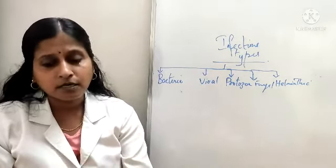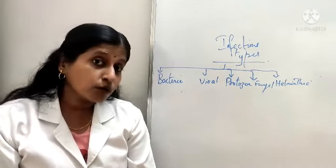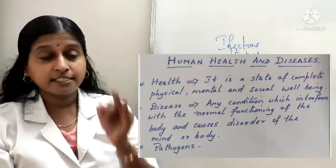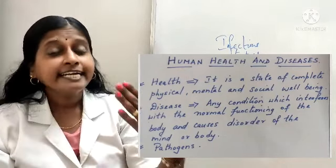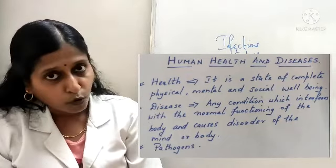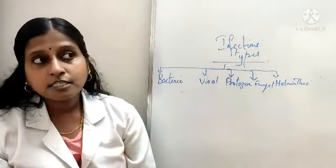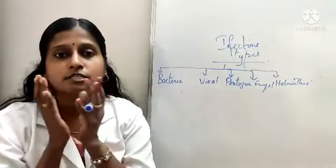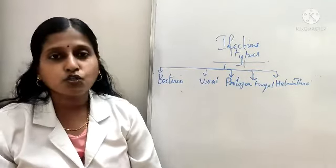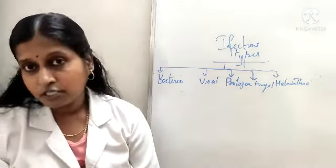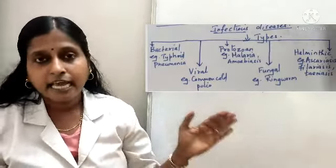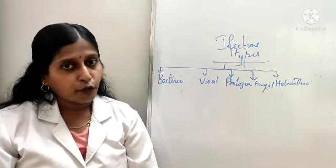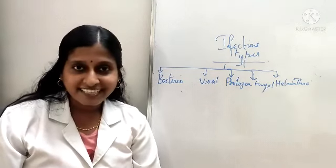So this is enough for today. Today we discussed: what is health — a state of complete physical, mental, social well-being and not merely free from disease. What is a disease — a condition which interferes with the normal functioning of your body. Types of diseases — infectious as well as non-infectious. Infectious are caused by extrinsic factors and infectious diseases are caused by a pathogen. Infectious diseases types, based on the pathogen, can be bacterial, viral, fungal, protozoal, or helminthic. With this, let me wind up for today. Have a nice day. Thank you.